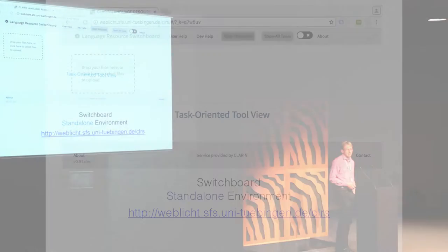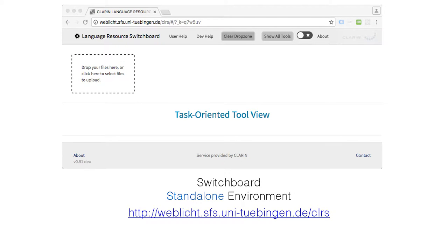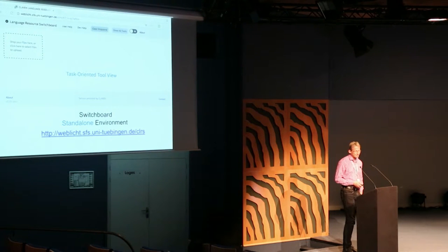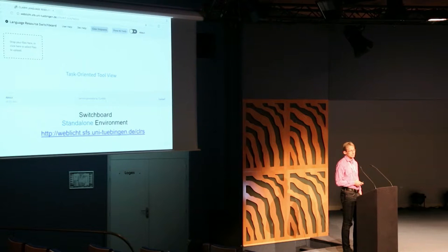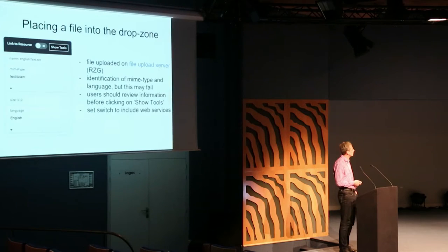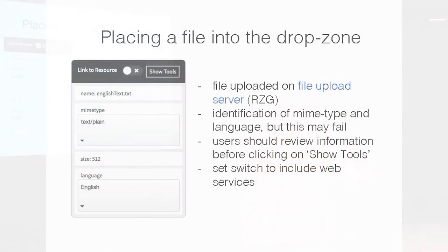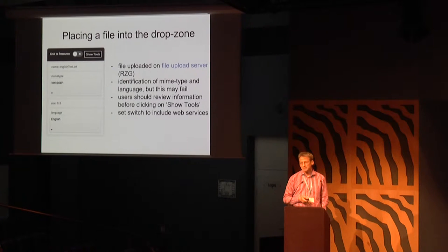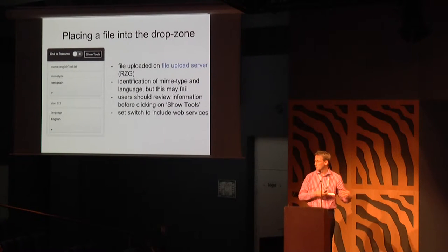Here you see the standalone version of the switchboard, which we used as our main development vehicle, and it seems quite popular and will stay. What you can do is take your resource from your file system and drag and drop it into the dotted area. An information pane opens telling you what the switchboard knows about your resource: the file name, file size, and it tries to deduce the MIME type and the language. As a side effect, your resource is uploaded to a centralized server so that the tool can fetch it.